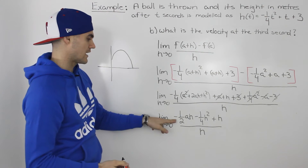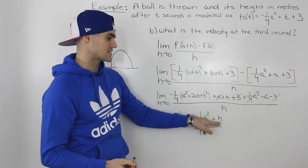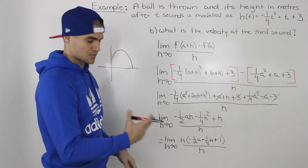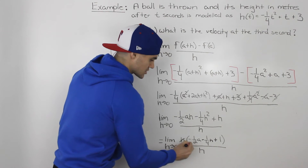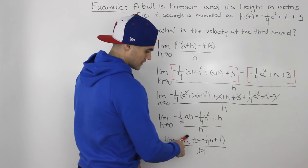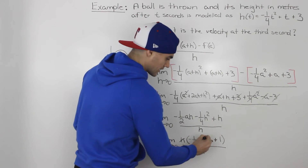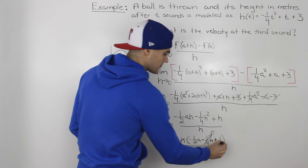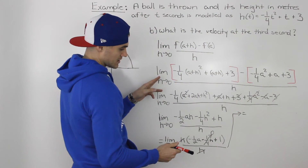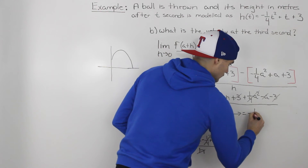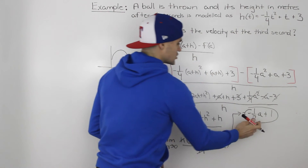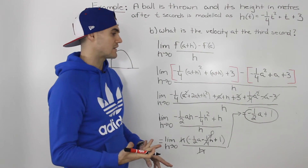We're left with negative one over two ah minus one over four h squared plus h in the numerator, all over h. Each term in the numerator contains an h, so we factor it out. The h's cancel, and we can plug in zero for h. The middle term negative one over four h goes to zero, leaving us with the general velocity equation: negative one over two a plus one. This represents the general velocity equation for any t value a.